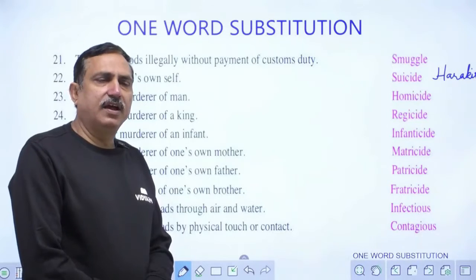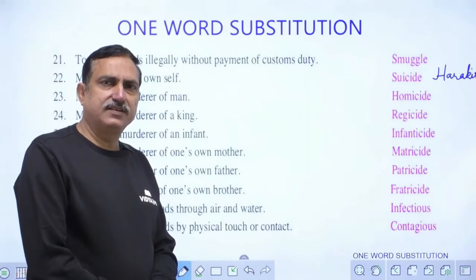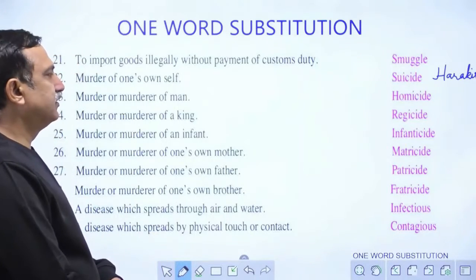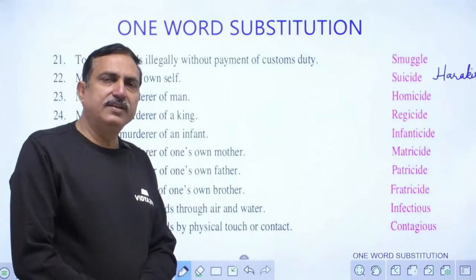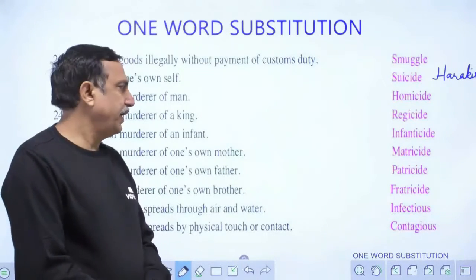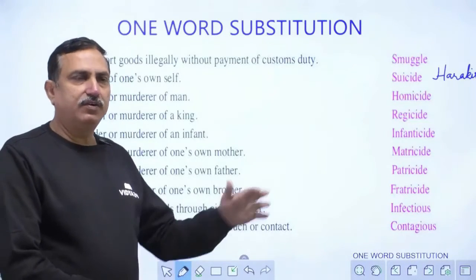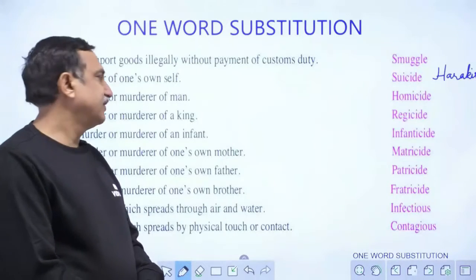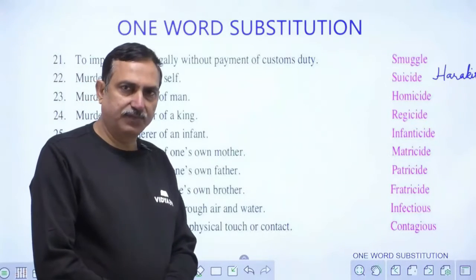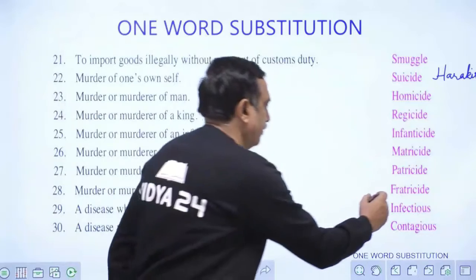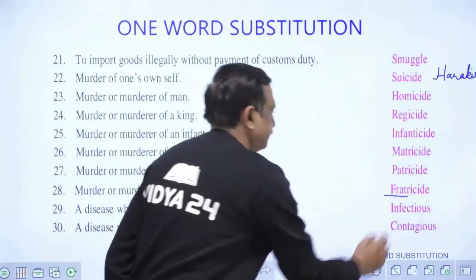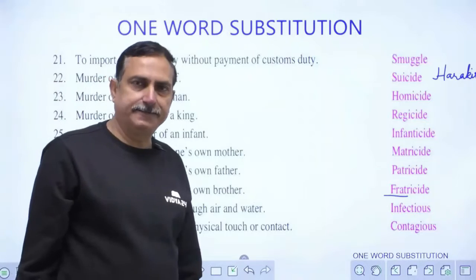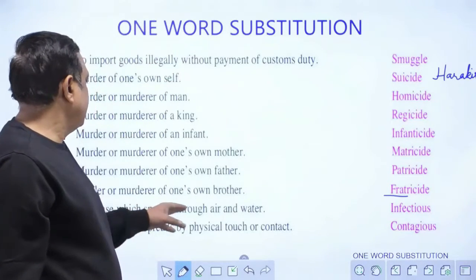Murder of one's mother is matricide — 'matri' stands for mother. 'Patri' stands for father, so killing of one's father is patricide. 'Fratri' comes from brother, so killing of one's brother is fratricide.